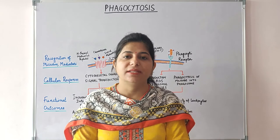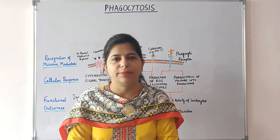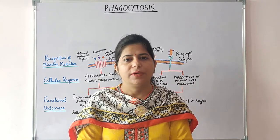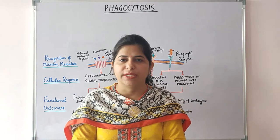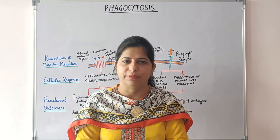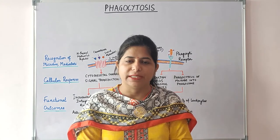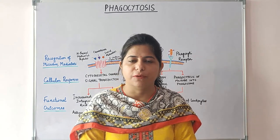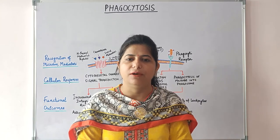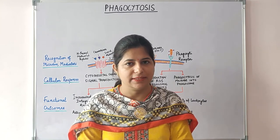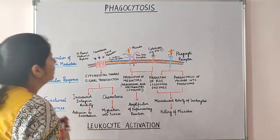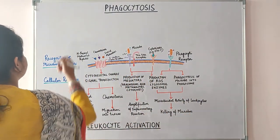Hello viewers. In the last video we studied about leukocyte recruitment to the site of inflammation. Once the leukocyte, mainly the monocyte and neutrophils, are recruited to the site of infection and tissue damage, they must be activated to perform their function — to eliminate the offending agent — and this is done by phagocytosis.